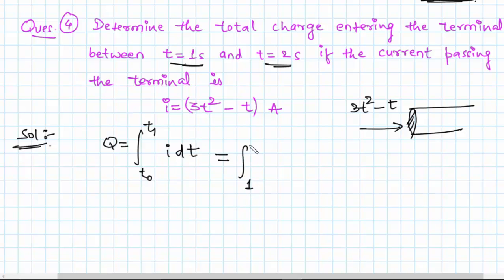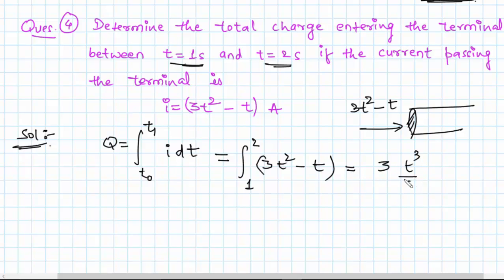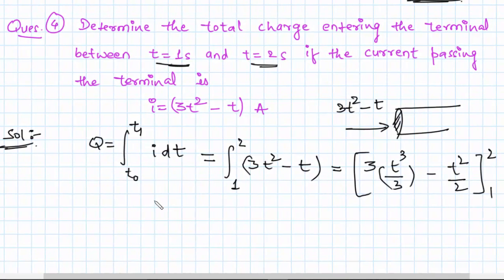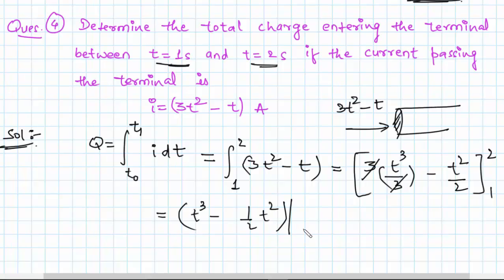Substituting the value of i, it will be the integral from t equals 1 to 2 of 3t squared minus t dt. This is a very simple integration, so it will be 3 times t cubed over 3 minus t squared over 2, with the limit from 1 to 2.